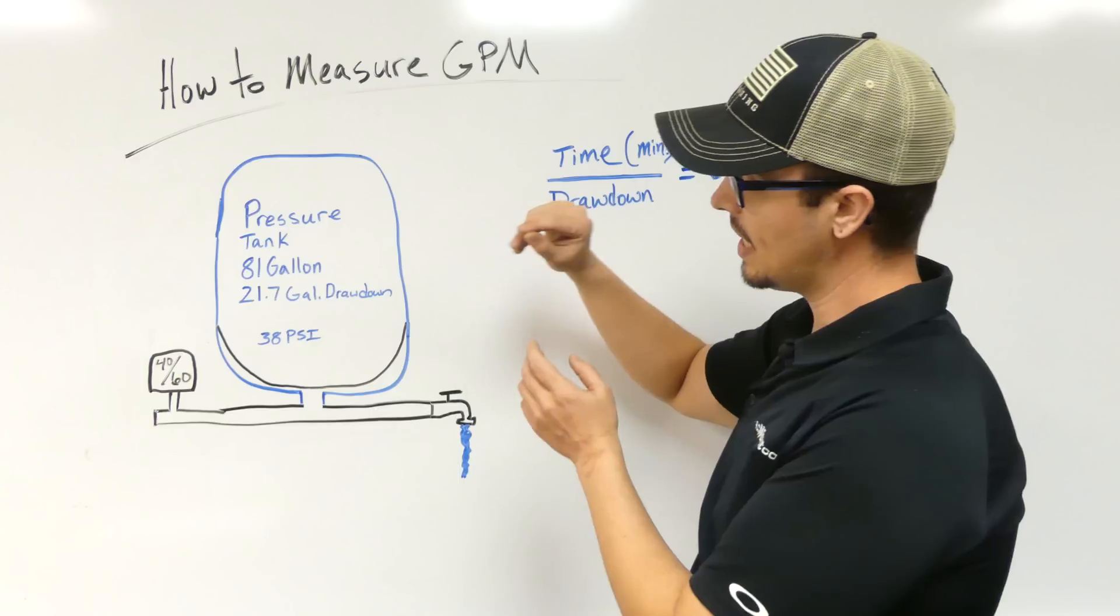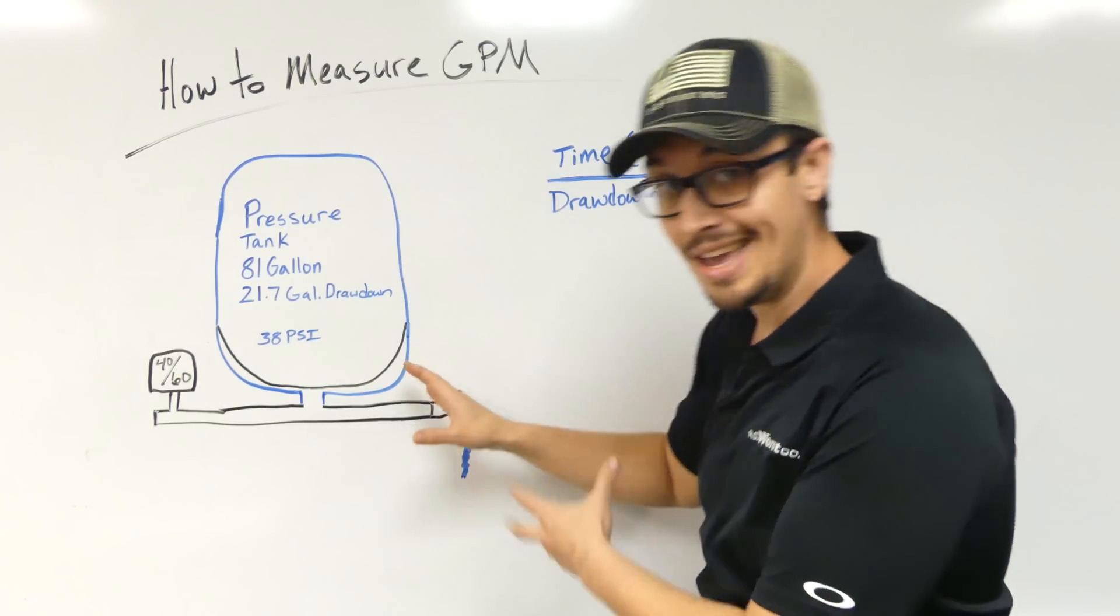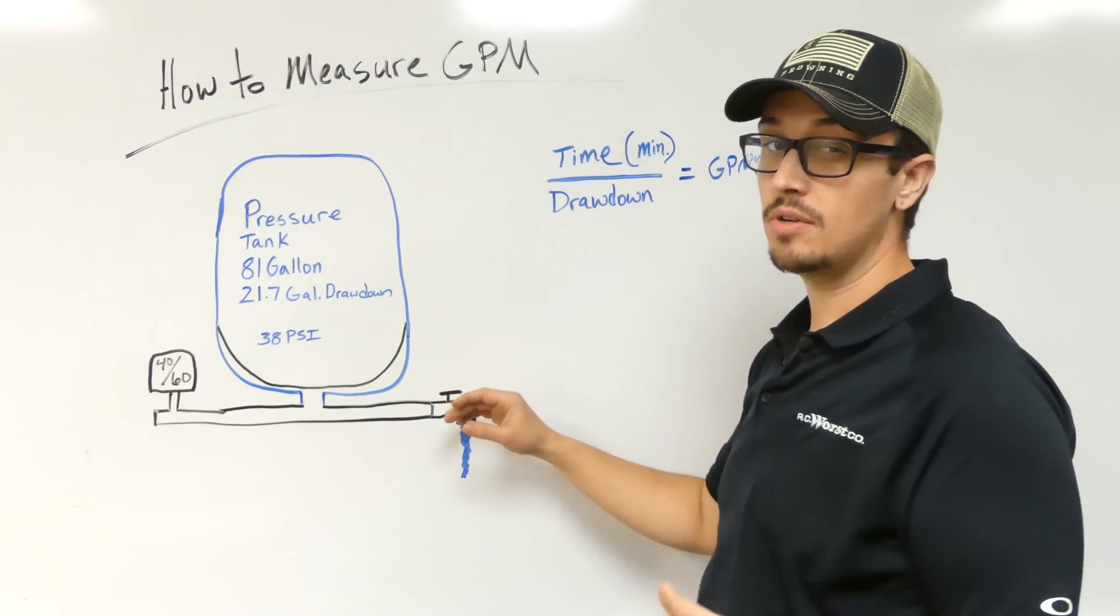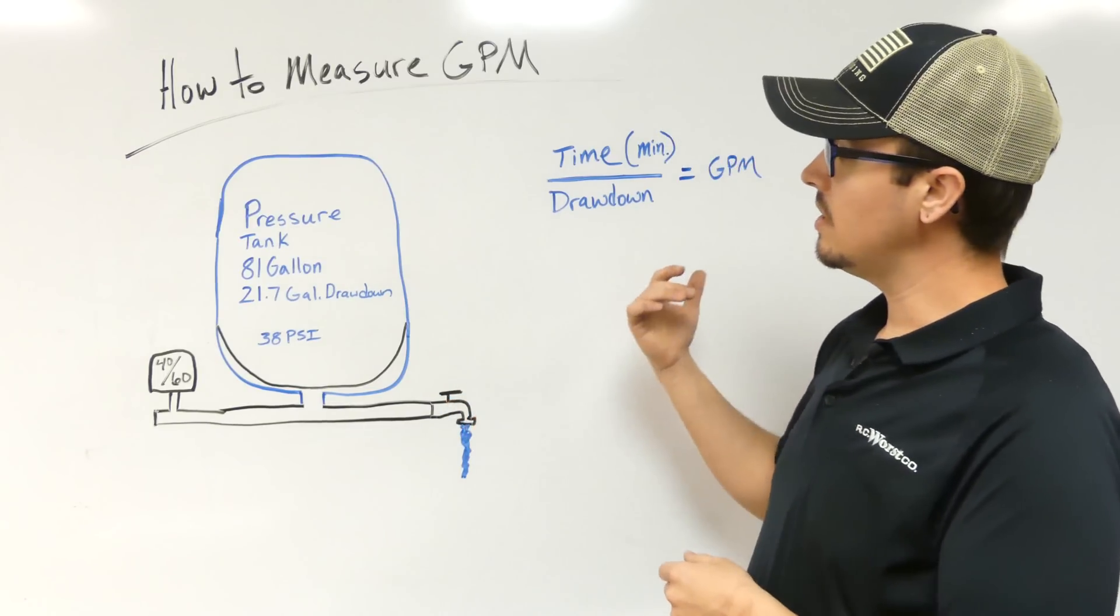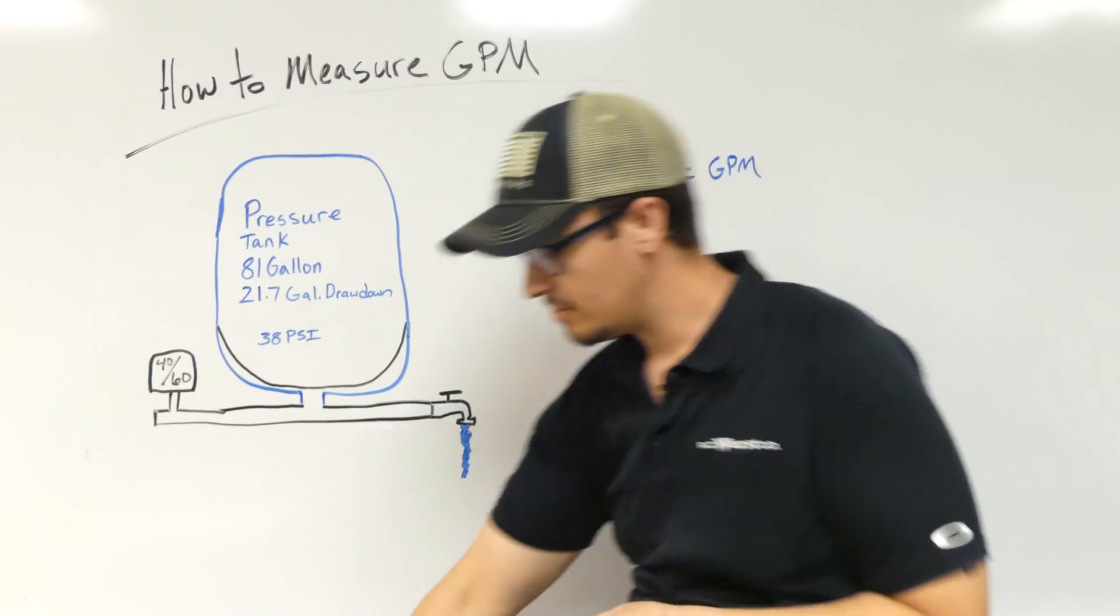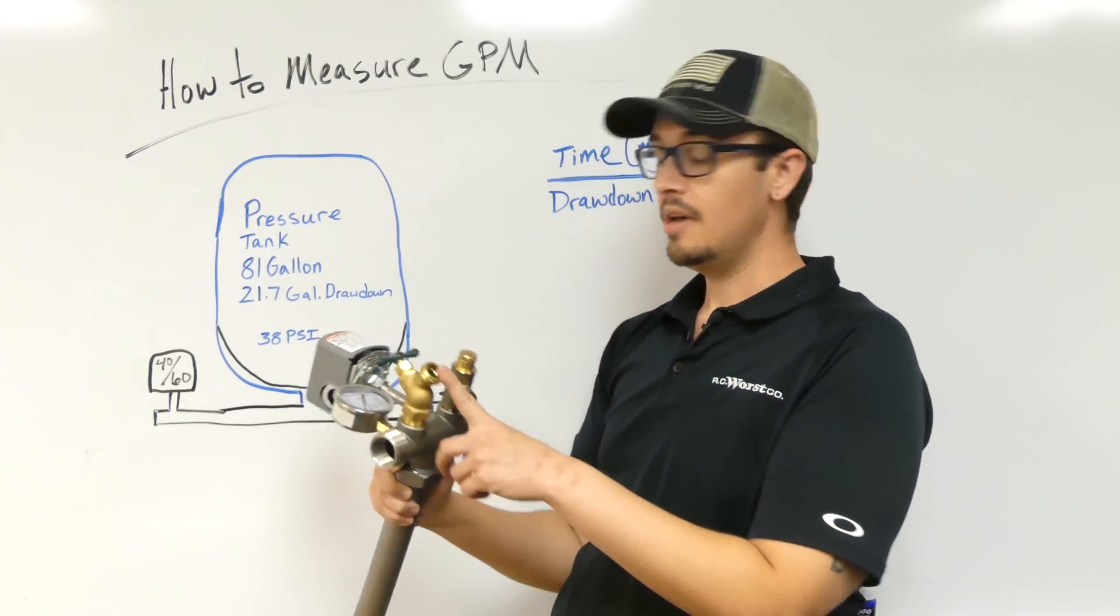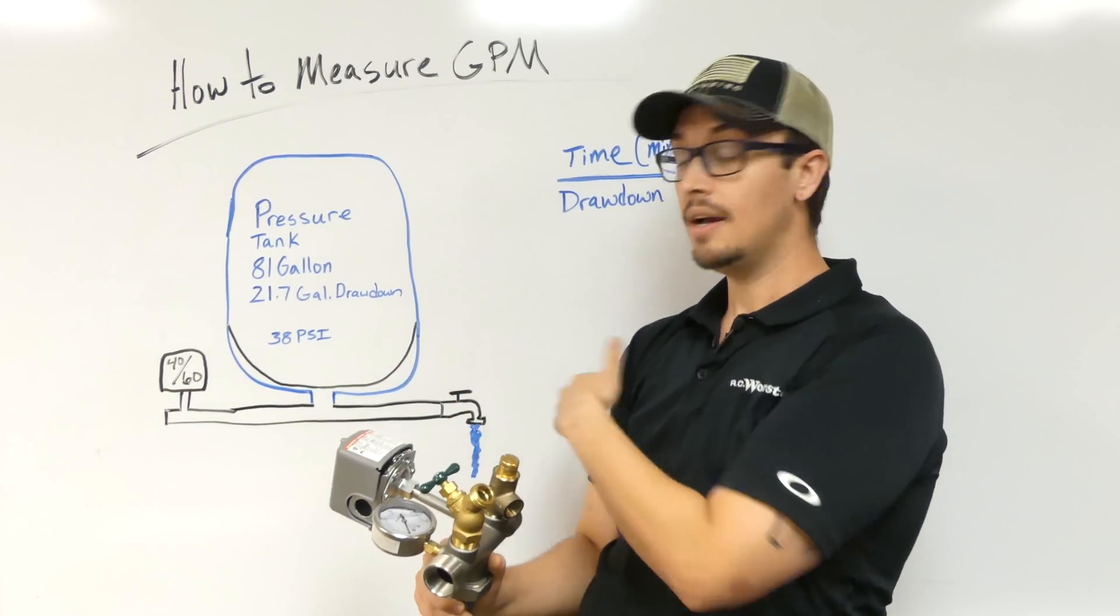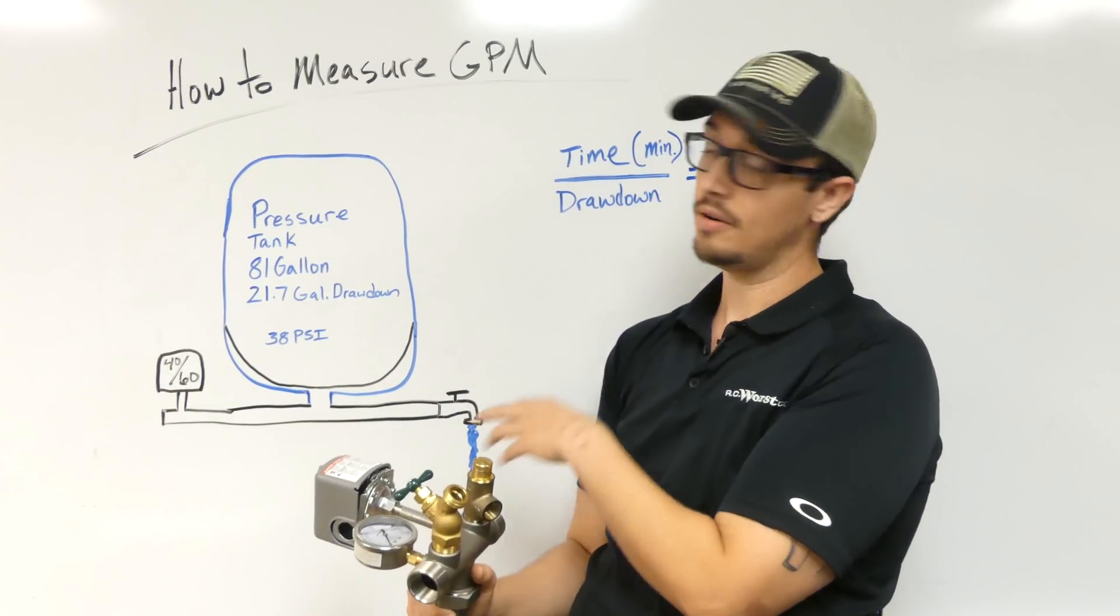what you need to do is get the system to where the tank is completely empty. First off, make sure nobody's going to be using any water in the house, and then what you need to do is go ahead and open this valve.